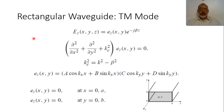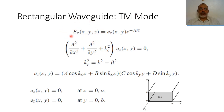In the previous two videos, we studied the rectangular waveguide transverse electric mode. Now we are going to study transverse magnetic mode in rectangular waveguide. In transverse magnetic mode, Hz equals 0, so the longitudinal component available is Ez.